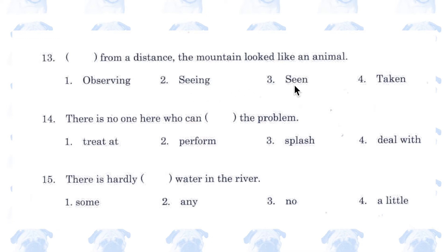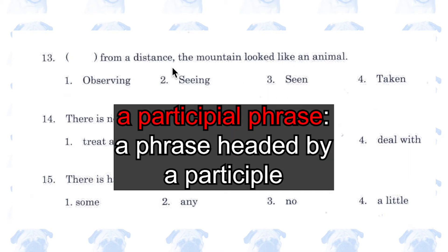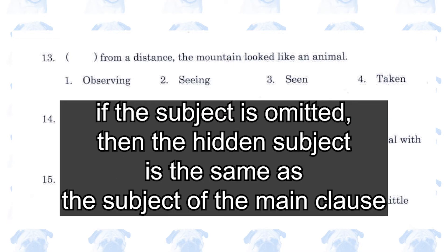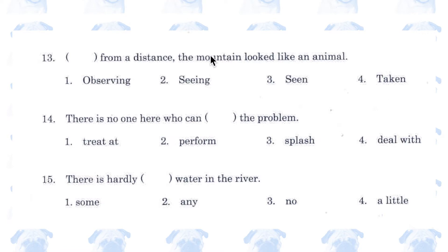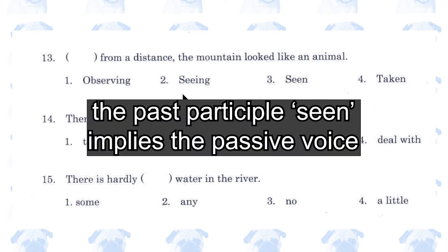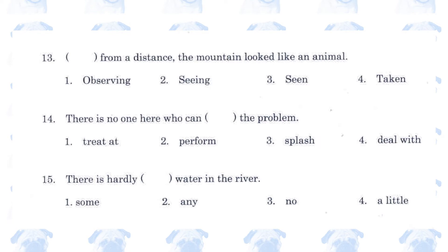Number 13. 'Observing / seeing / seen / taken from a distance, the mountain looked like an animal.' Number 3, 'seen'. This is a participial phrase, and when the subject is omitted, we assume the hidden subject is identical to the subject of the main clause — here, the mountain. You have to ask: does the mountain see, or is the mountain seen? The answer is the latter, because mountains cannot do the seeing action, but mountains can be seen from a distance.